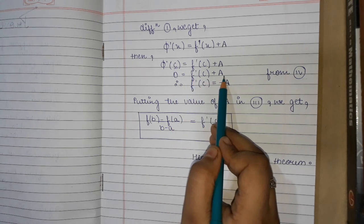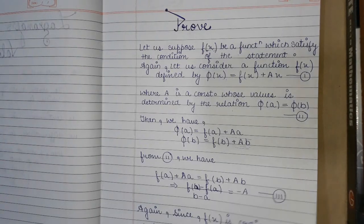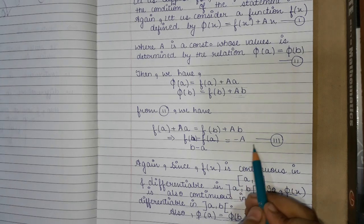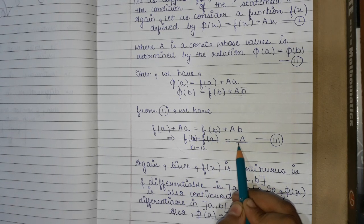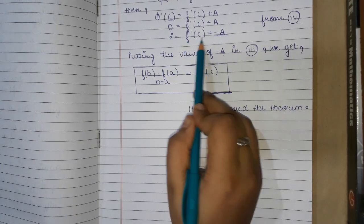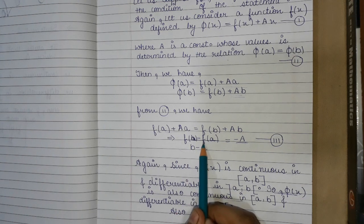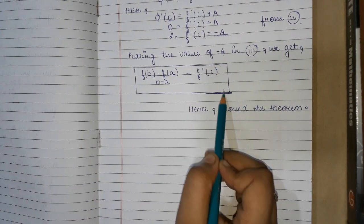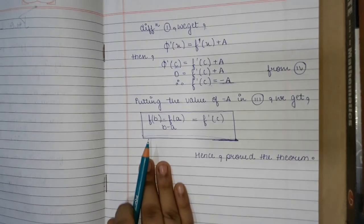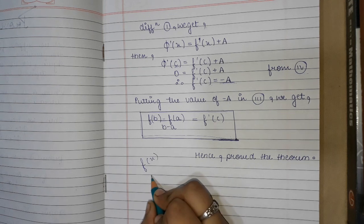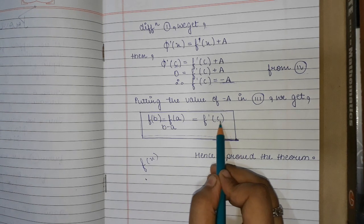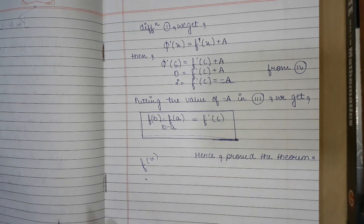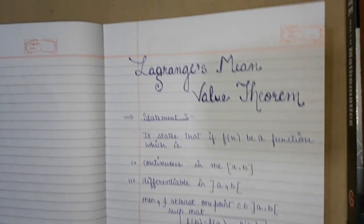Now putting the value of minus A from equation 3 into this result, we get f(b) minus f(a) by b minus a = f'(c). Thus we have proved that if f(x) is continuous and differentiable, there exists a point c such that f(b) minus f(a) by b minus a equals f'(c). Hence Lagrange's Mean Value Theorem is proved.